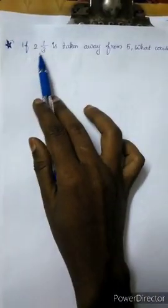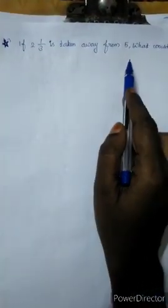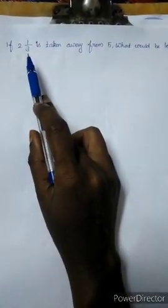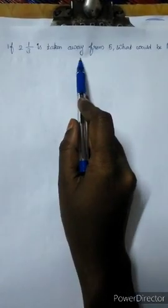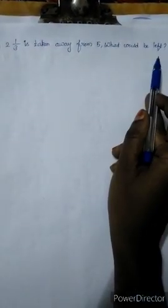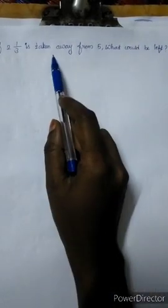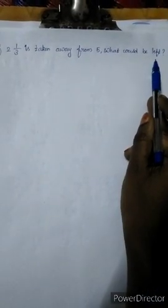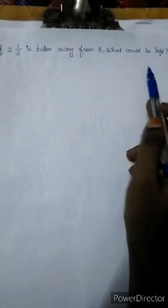Next question. If 2 1 by 3 is taken away from 5, what would be left? Here the question is 2 1 by 3 is taken away from 5. What would be left? Already we know that taken away and left are the keywords for subtraction.